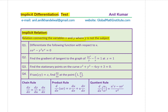Question one: differentiate the following function with respect to x — x·e^y minus y³·e^x equals zero. Question two: find the gradient of the tangent to the graph of 2x²/y minus y/x equals 1 at x equals 1. Question three: find the stationary points on the curve x² + y² - 4xy + 3 = 0. Question four: if tan(xy) equals x, find dy/dx at the point (1, π/4).